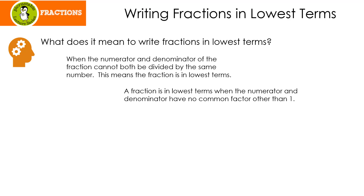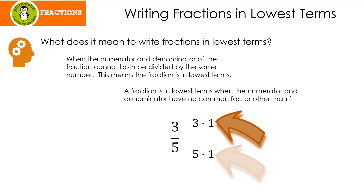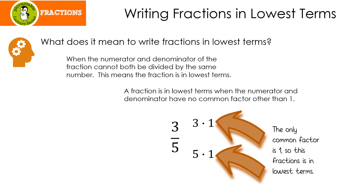Let me give you an example. Here's 3 fifths. The factors for 3 are 3 times 1, and the factors for 5 are 5 times 1. Do you notice that the only common factor here is 1? Since the only common factor is 1, this fraction is in lowest terms. That means it can't be reduced any farther.